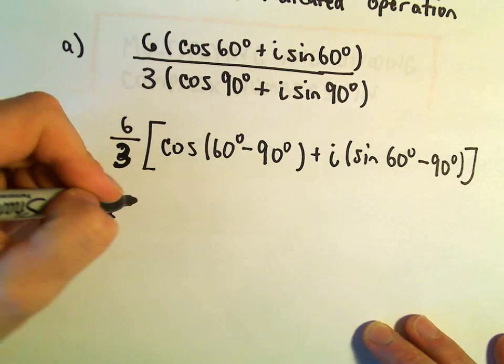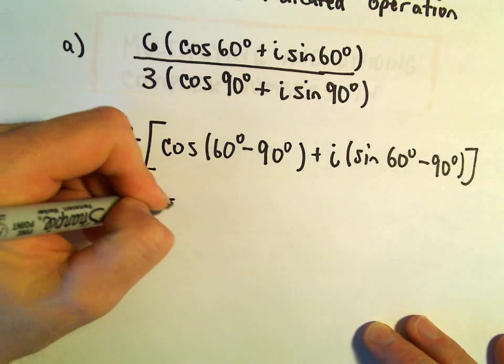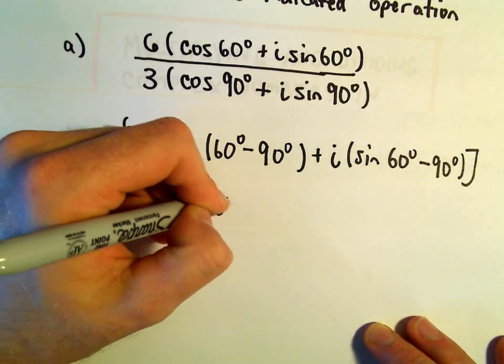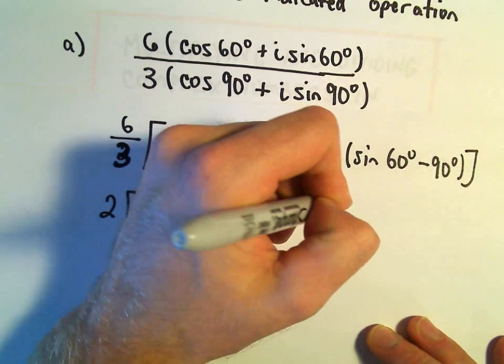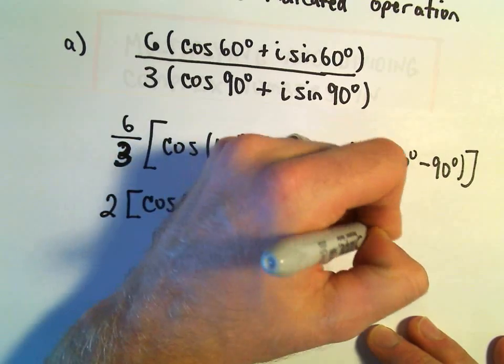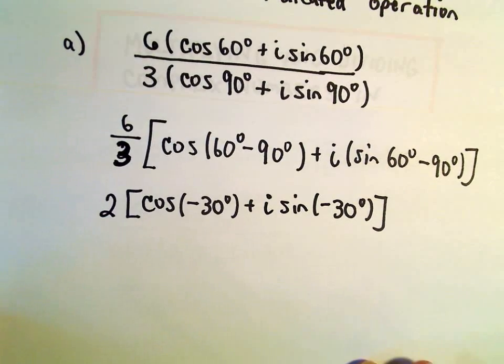And 6 over 3 is 2. This will be cosine of negative 30 degrees plus i sine of negative 30 degrees, and boom, that's it. We're done.